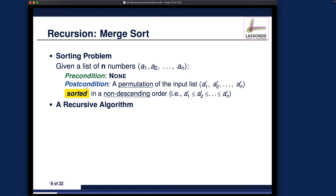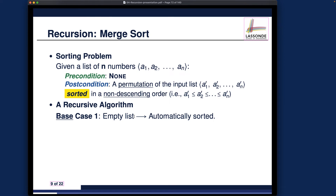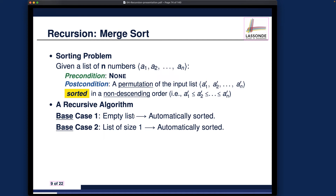Now let's talk about the base cases for the recursive merge sort algorithm. Base cases are usually easier to understand but are foundational. First, if you're given an empty list, it's automatically sorted — trivial but important. Second, if the list contains only one element, you also don't need to do any work; it's automatically sorted. These two base cases apply to all sorting algorithms we'll cover: selection sort, insertion sort, merge sort, quick sort, and heap sort. When the collection is empty or of size one, return right away.